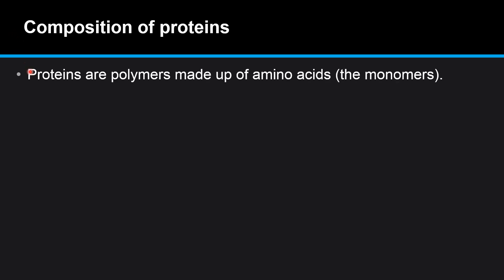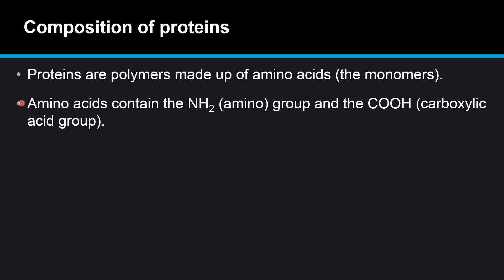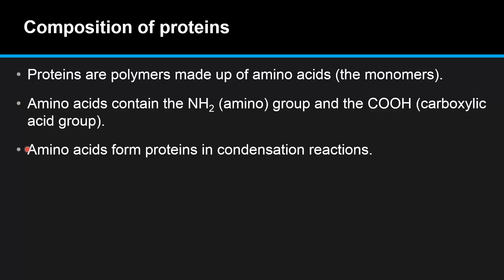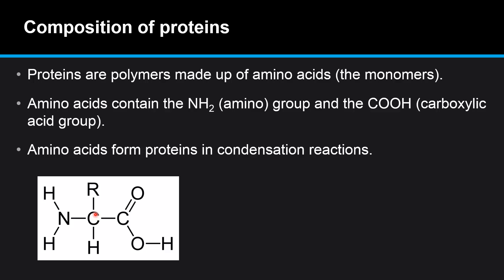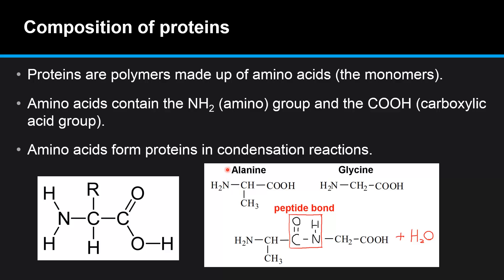And finally, the composition of proteins. Proteins are polymers made up of amino acids, which are the monomers. Amino acids contain the NH₂, or amino group, and the COOH, or carboxylic acid group. Amino acids form proteins in condensation reactions. Here's the structure of a 2-amino acid — it's a 2-amino acid because the R group, which is different for every amino acid, is on carbon number two. We have the amino group, the NH₂ group here, and the C double bond O, OH group, or the carboxyl group on the right. In this example, we have alanine and glycine, which react together forming a peptide bond — a condensation reaction in which a molecule of water is released.